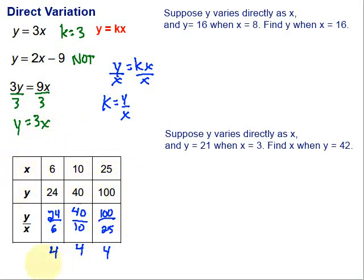And we could write that then, since we know what k is, we can write our equation to represent this situation as y equals k is 4, because remember we found that y divided by x, 4x.